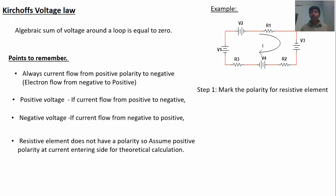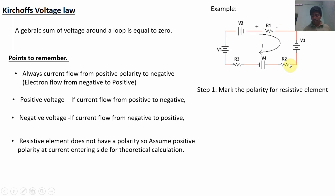First step: mark the polarity for each resistive element. Plus polarity at current-entering side, negative polarity at current-leaving side. For R1, the current entering side gets positive polarity and the current leaving side gets negative polarity. For R2, current entering side is plus and current leaving side is negative. Similarly for R3 also.